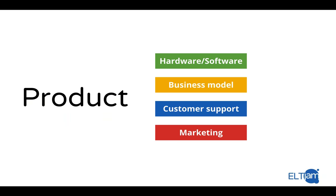A product in the digital age is a combination of many different things. Often there's a hardware or software component — but the product is not just the hardware and software. It's also the business model, customer support (or 'customer success'), and marketing — how people feel about your product and how much they want it. Take the iPhone: what makes it amazing is not just the hardware and software, but the business ecosystem with the App Store, the Genius Bar for customer support, and all the work Apple do to make you feel positive about owning one.